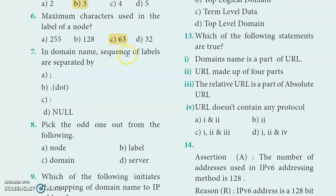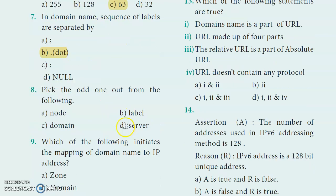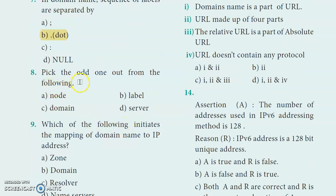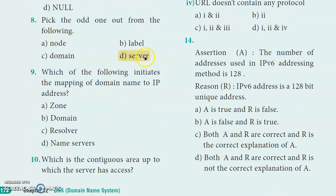The answer is option C. Eighth question: Pick the odd one out from the following - node, domain, label, server. The answer is D - server.